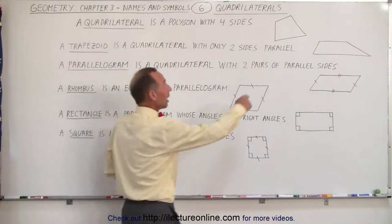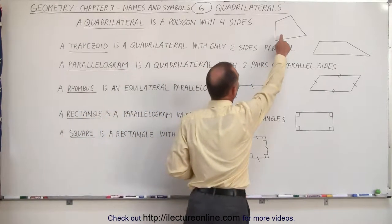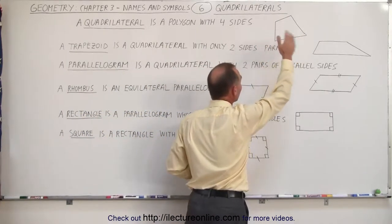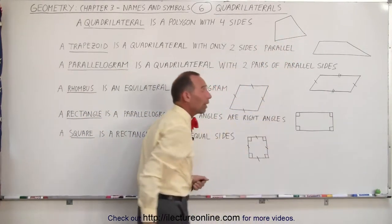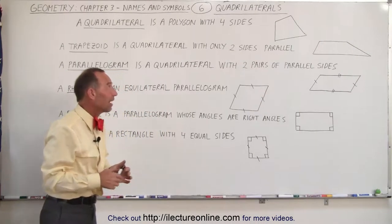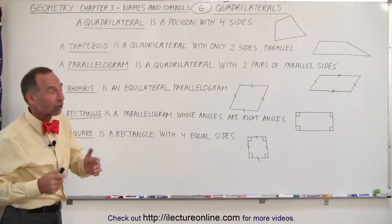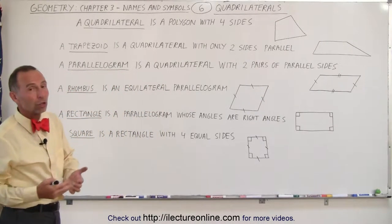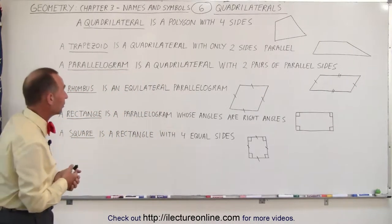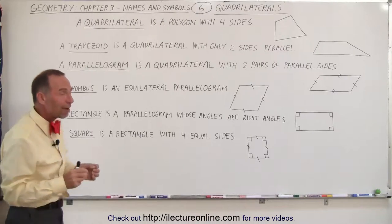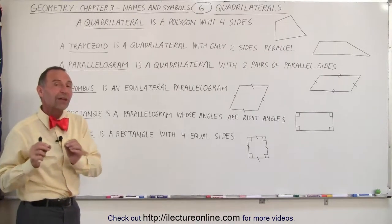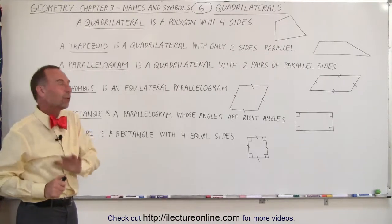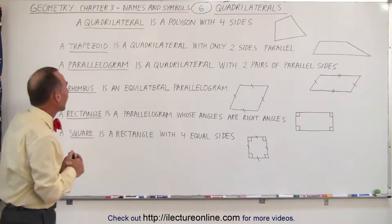Here's an example of what a quadrilateral could look like. There's no symmetry anywhere, just any different kind of angles. As long as it has four sides and four angles, we call it a quadrilateral. But we have very special types of quadrilateral — we have five of them, so let's talk about it.